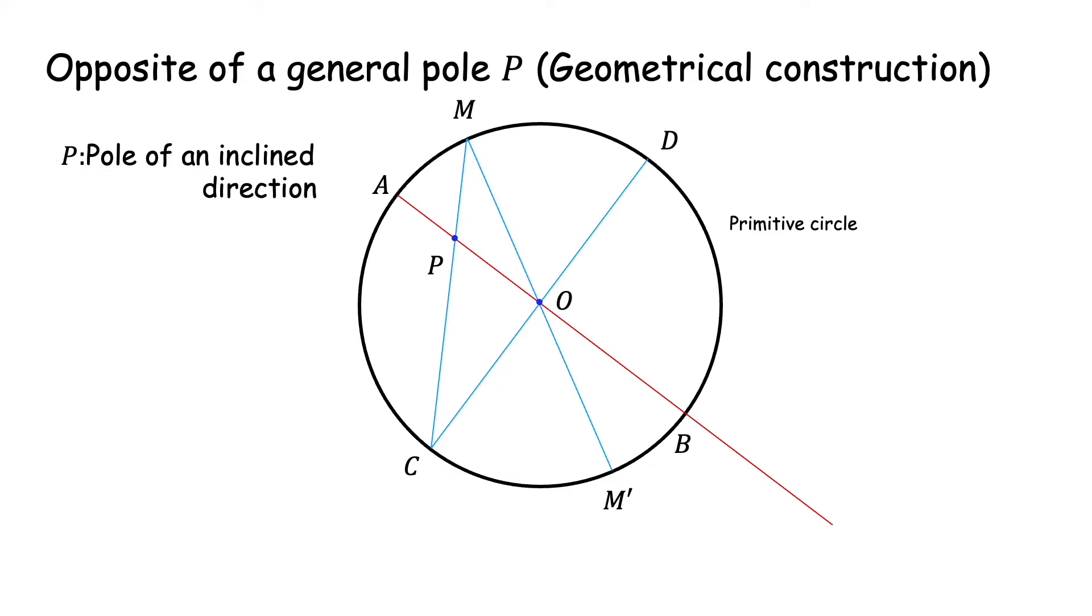We join C to M' and extend it to intersect the diameter through AB at P'. P' is the opposite pole of P. P' represents a direction which is 180 degrees away from the direction represented by P.